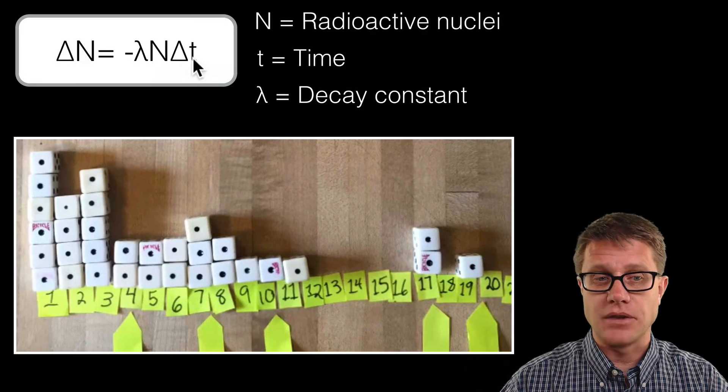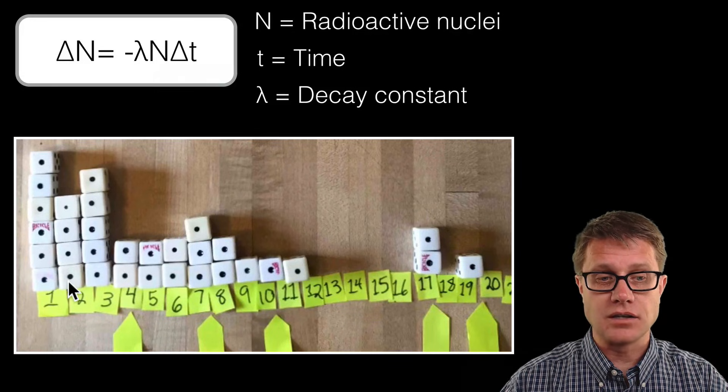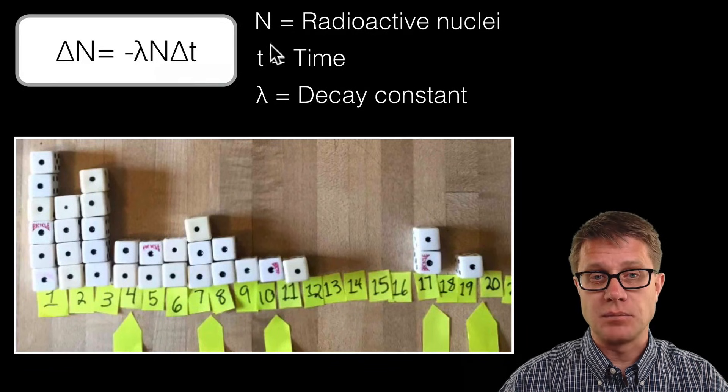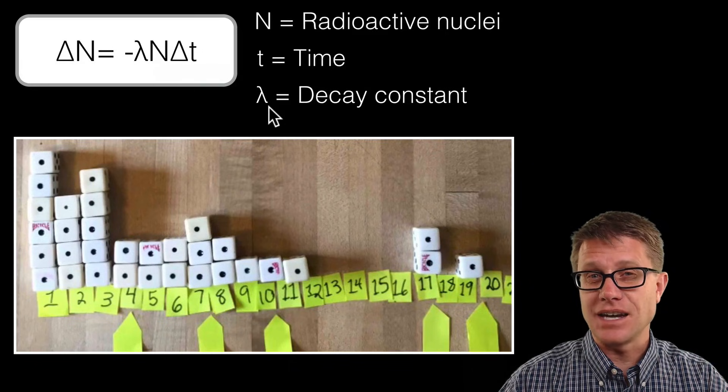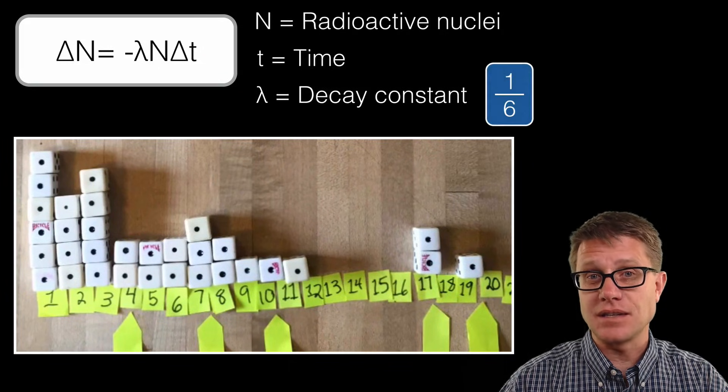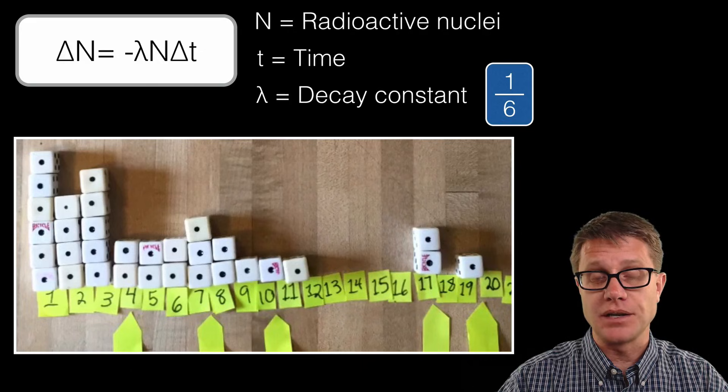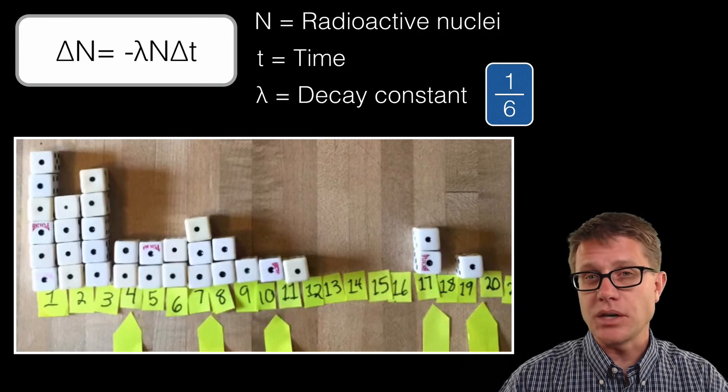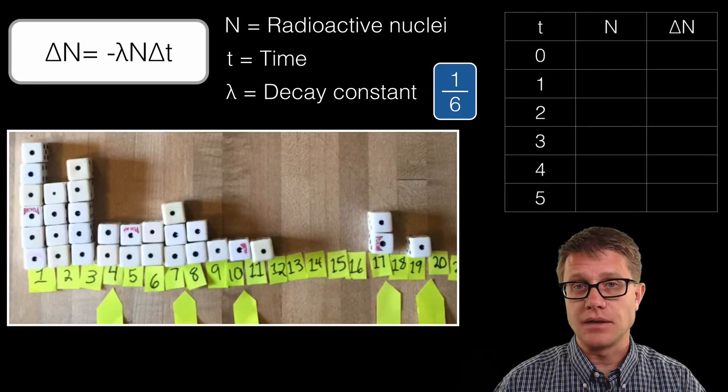If we work backwards from that, in this simulation here our time was advancing one generation after another, so that is going to be 1 each time. What was our decay constant? Well, it is 1 in 6. So it is a 1/6 probability that you are going to roll a 1 and that that one is going to decay. We could model that. I will just use a quick little spreadsheet to do that.